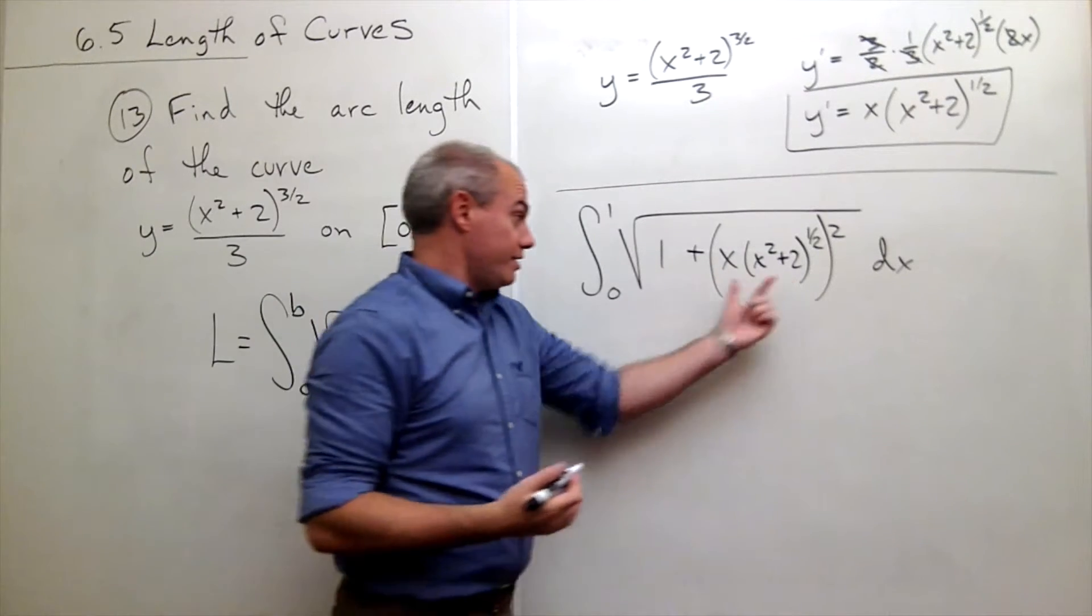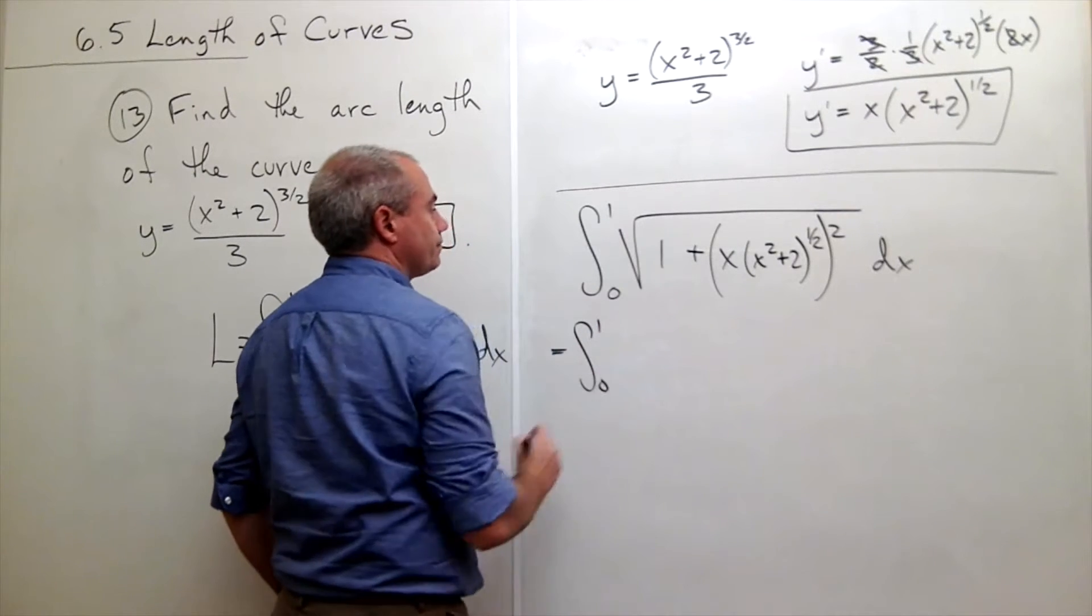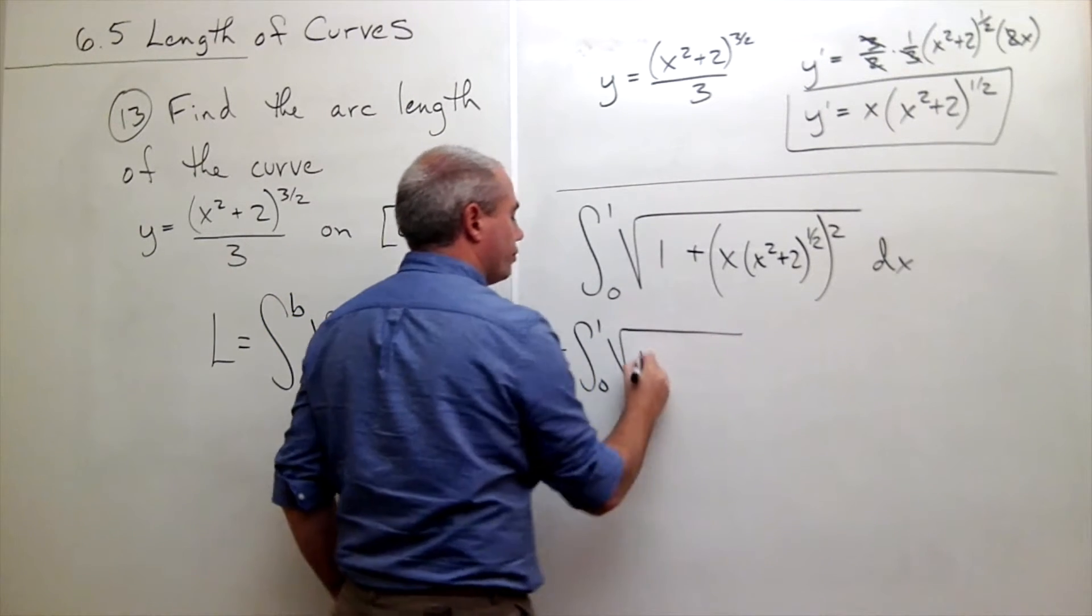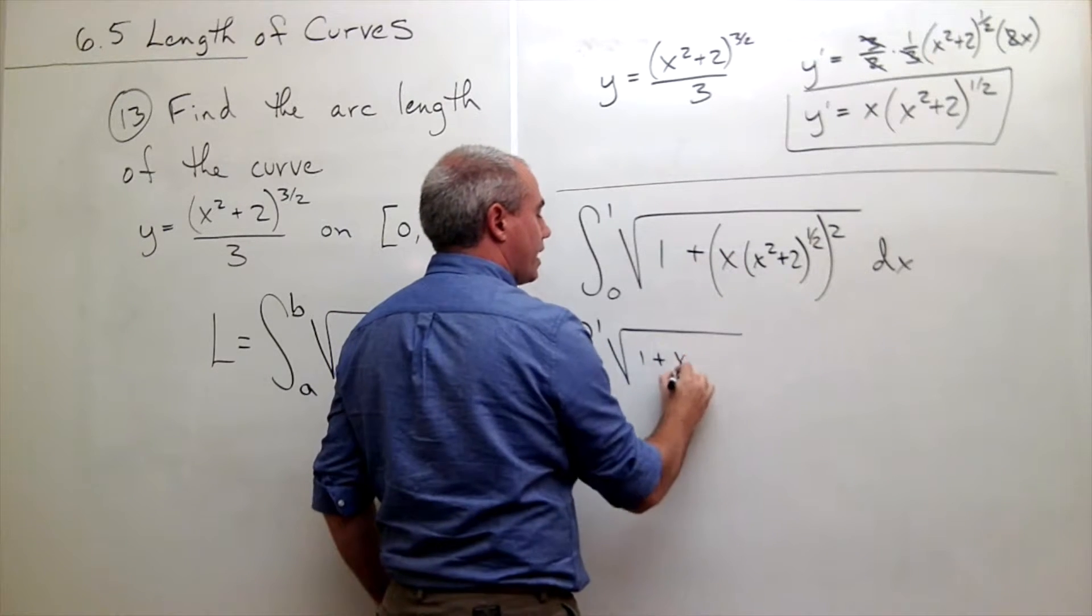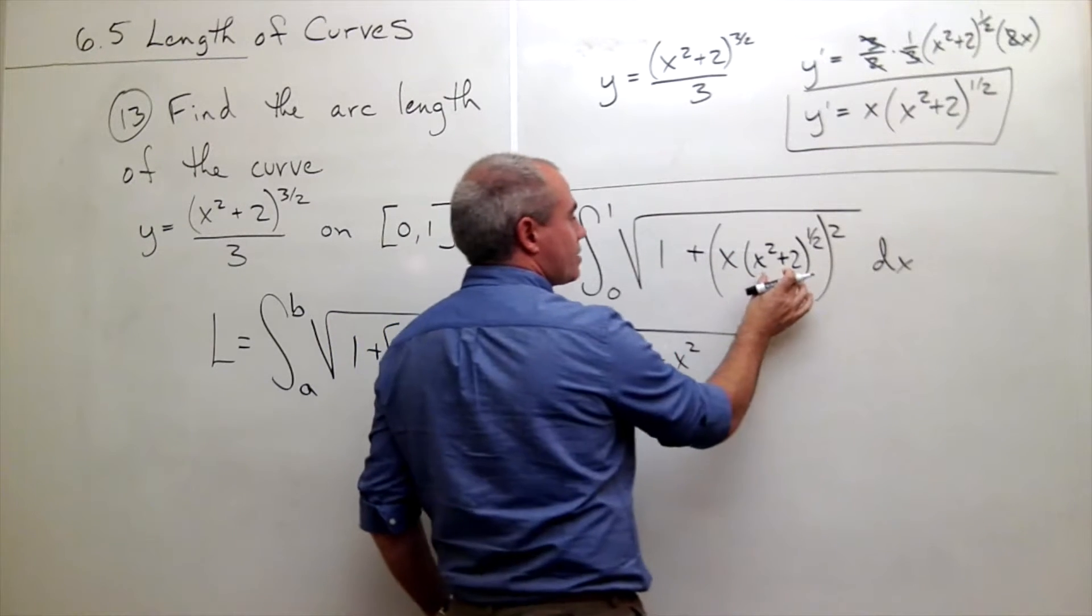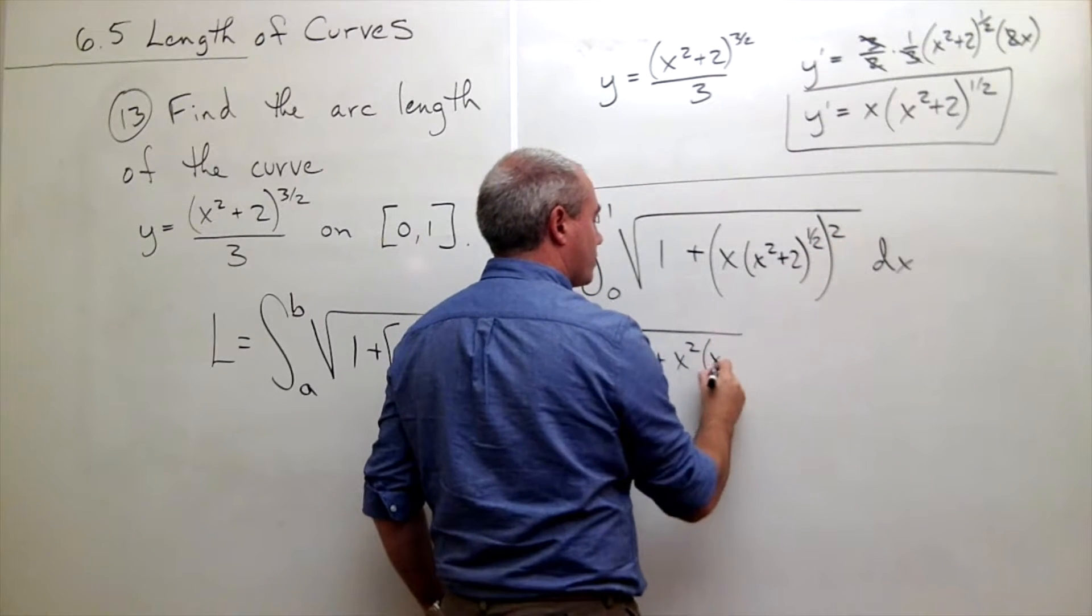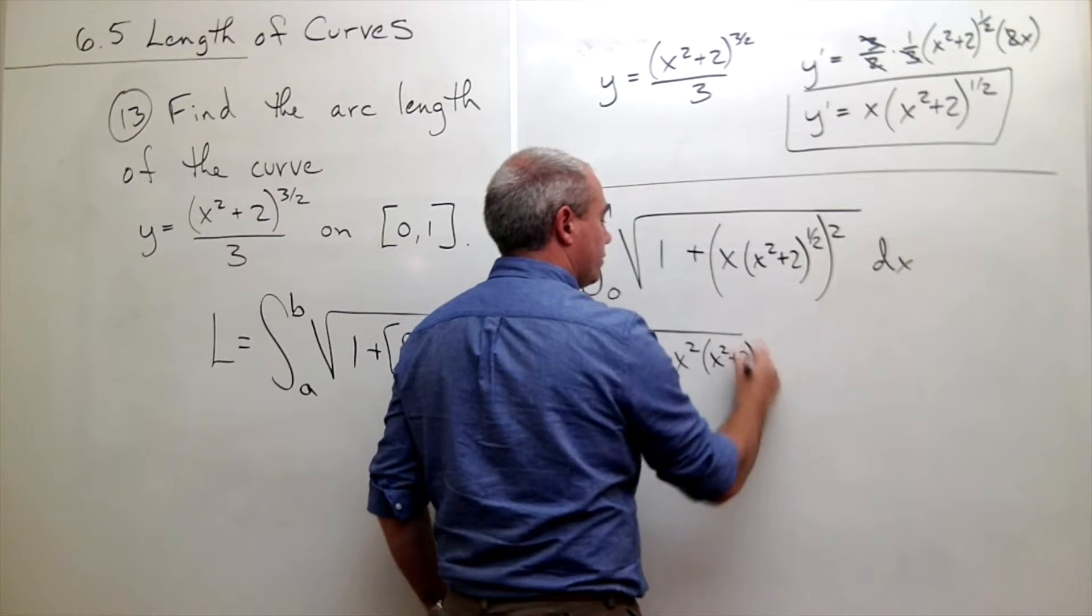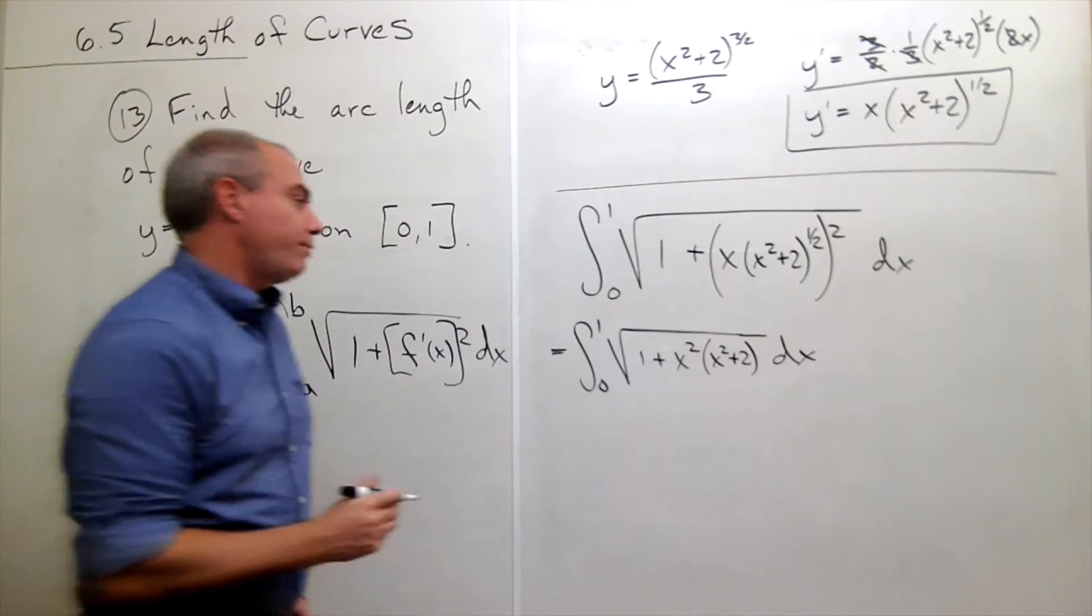Let's square this. And when I do, I get integral from 0 to 1 of the square root of 1 plus, when I square x, I get x squared. And when I square x squared plus 2 to the 1 half, I just get x squared plus 2 dx.